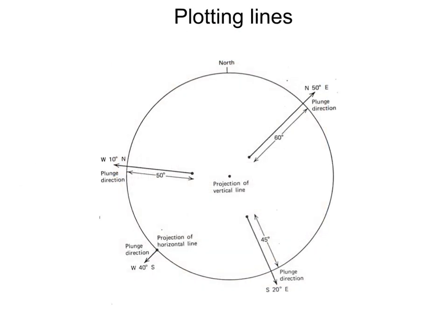This figure shows lines of different trend and plunge. A horizontal line with plunge 0 will fall on the primitive. A vertical line with plunge 90 will fall on the center of the stereonet.